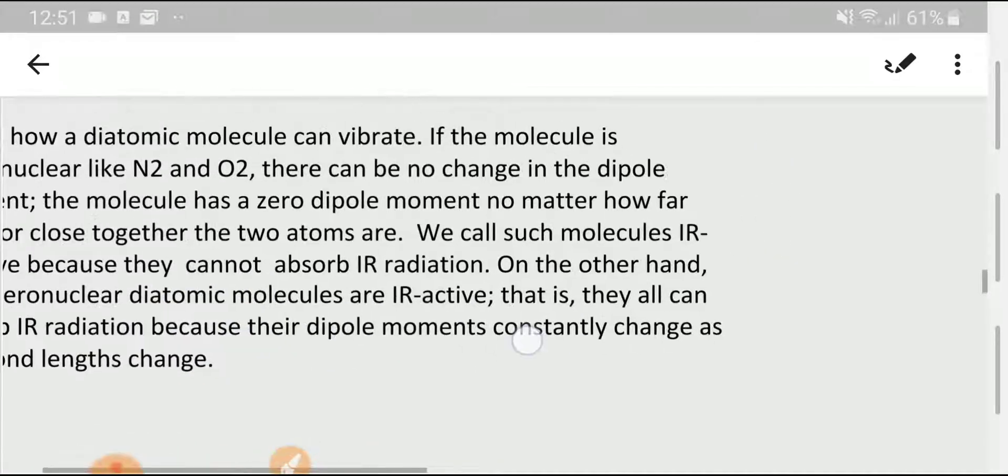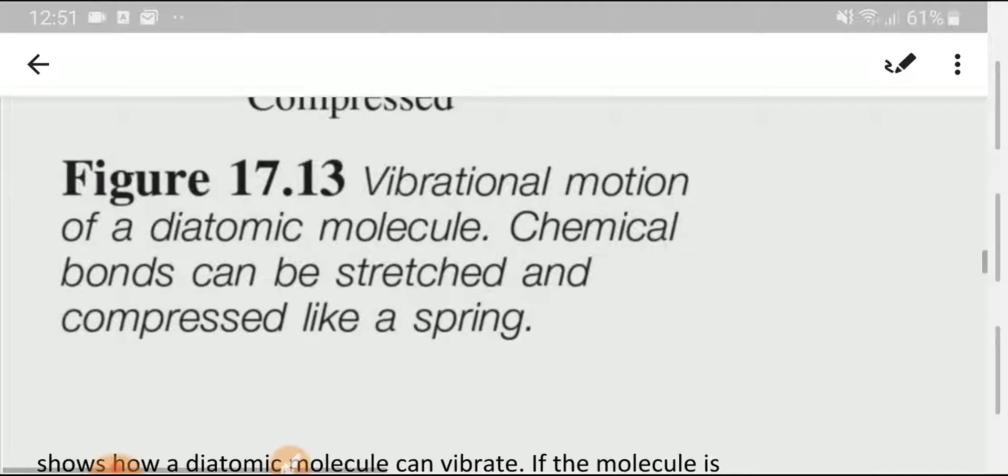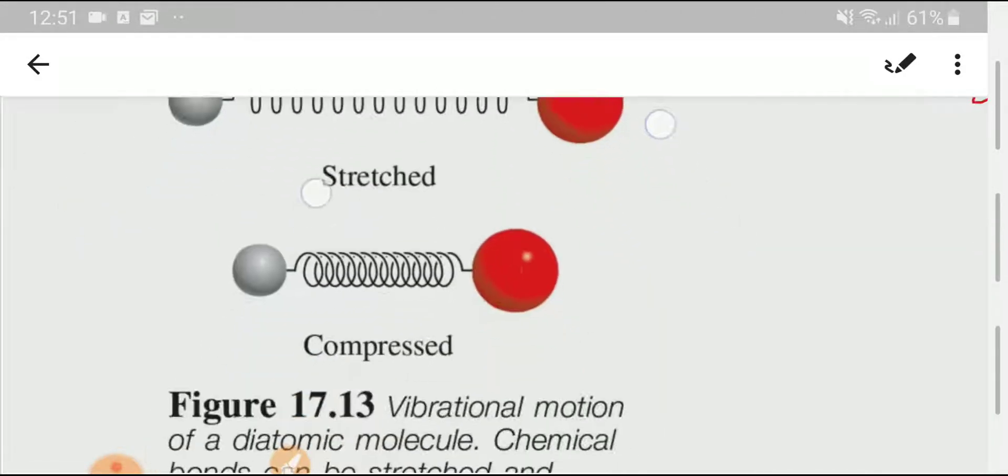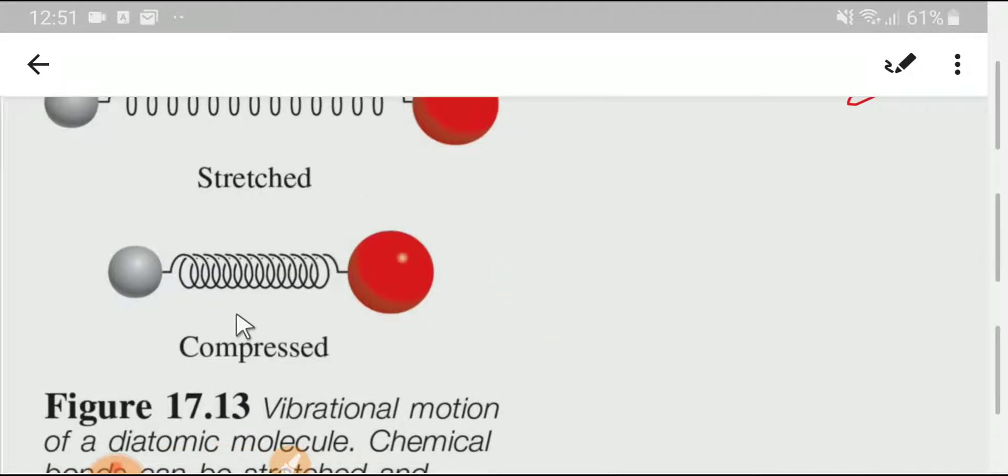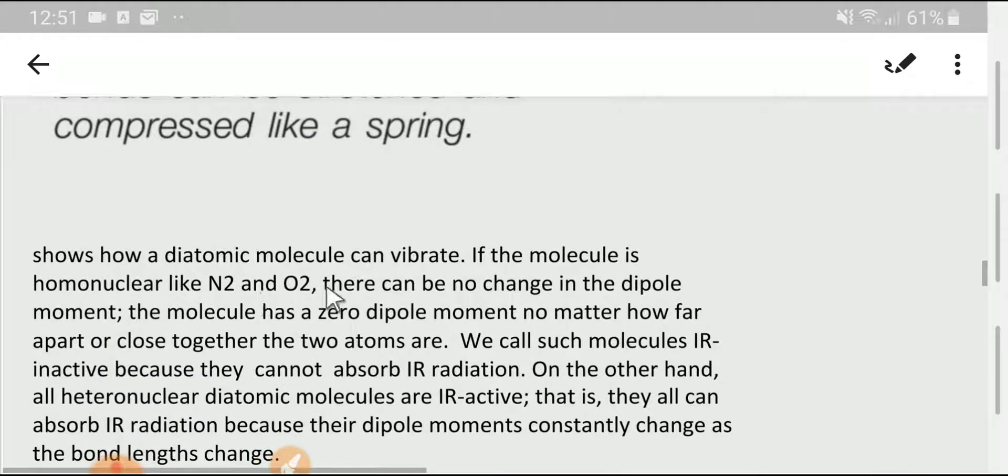The above picture shows how a diatomic molecule can vibrate. If the molecule is homonuclear like nitrogen or oxygen, there can be no change in the dipole moment. The molecule has a zero dipole moment no matter how far apart or close together the two atoms are.